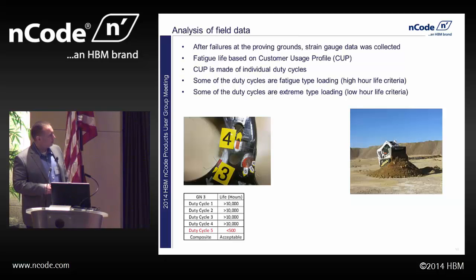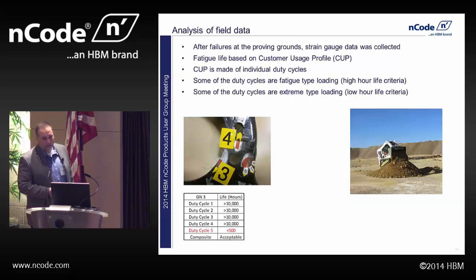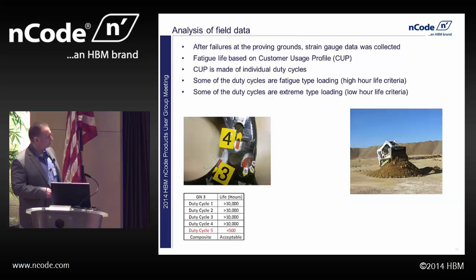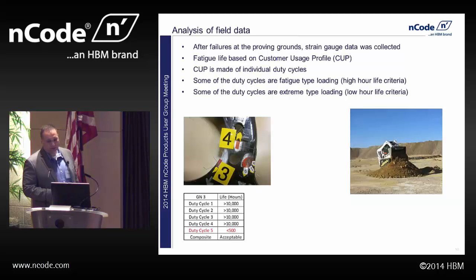We said we better take a closer look, so we slathered this component with strain gauges based on where we were seeing failures, and then we did our full custom usage profile. Our CUP is made up of individual duty cycles — some are fatigue-type loading that we expect the machine to do for thousands of hours, and some are extreme-type loading that won't happen very often but the machine should be able to handle at least once. The results came back and everything was fine — we had very high life; some were infinite life. One duty cycle was low, but frankly all our strain gauges are typically low on that very extreme duty cycle. Based on our criteria, this was acceptable. We would have said this design was acceptable if we hadn't had those field failures.